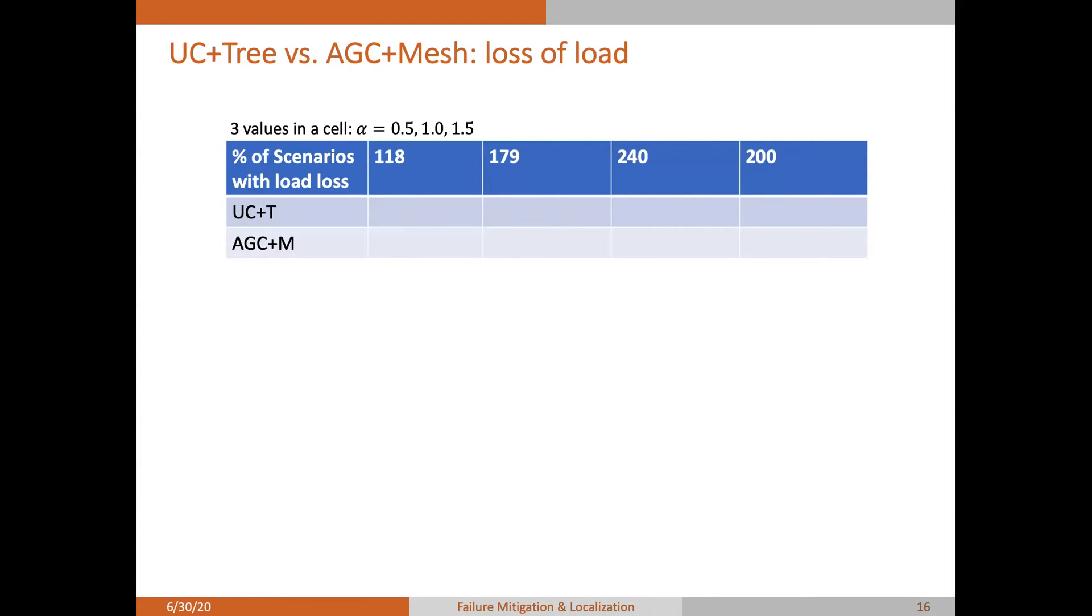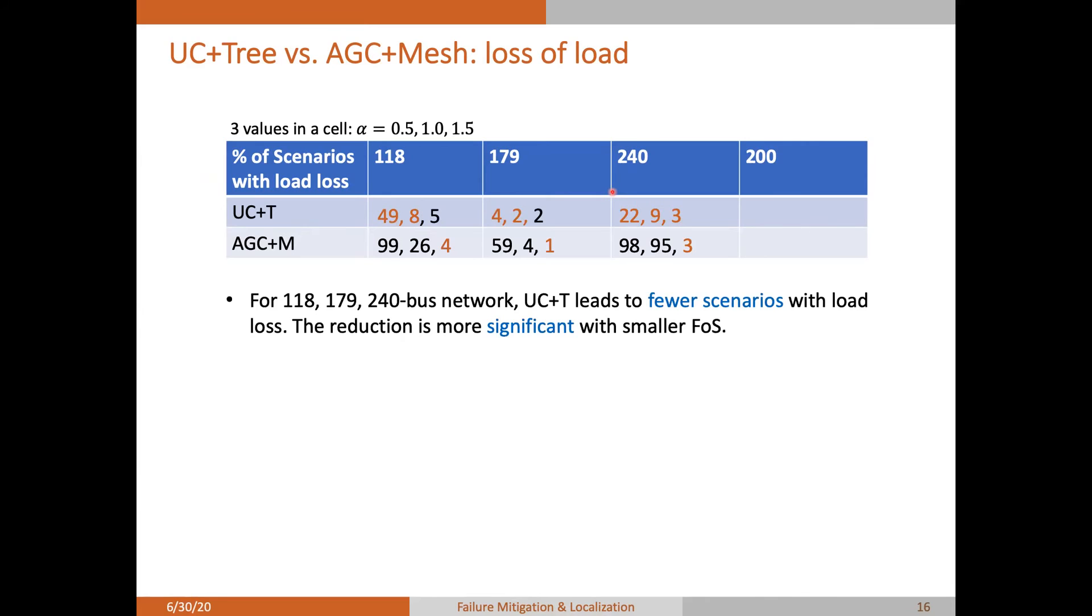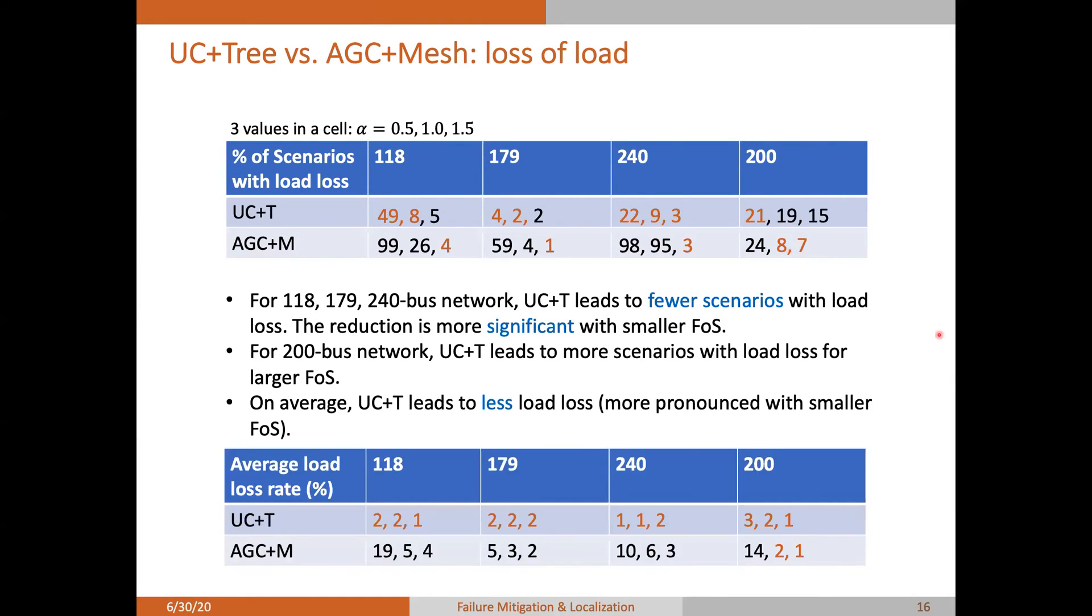Let's first take a look at the mitigation performance. In this table, we show the fraction of scenarios with non-zero load loss among all these simulated failure scenarios. There are three values in a cell corresponding to three different factors of safety. In the first three networks, we see that our approach leads to fewer scenarios with low loss, and this reduction is more significant when the system is congested. For 200 bus network, we see that UC tends to lead more scenarios with low loss for a large factor of safety. Nevertheless, if we look at the average load loss, there is indeed a significant advantage for our approach, especially when the system is more congested.